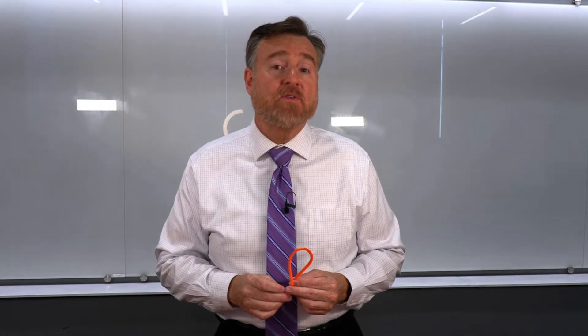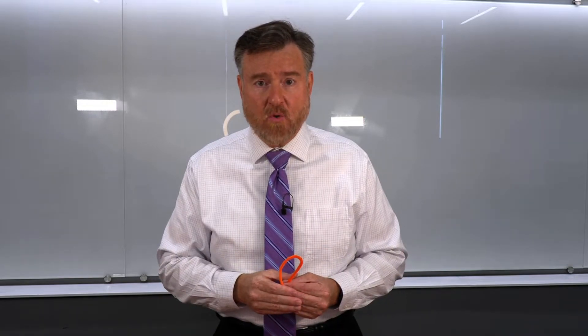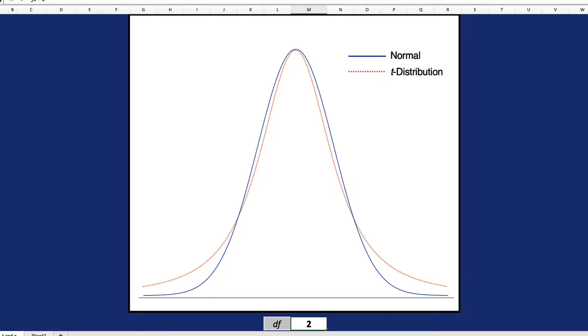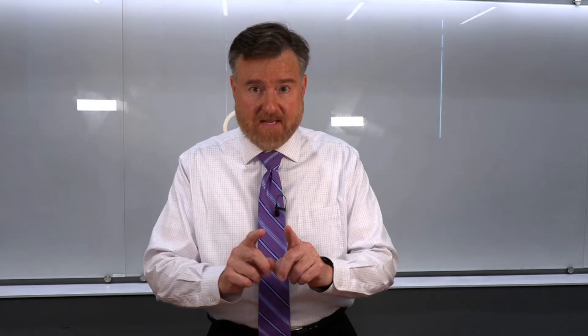Let me illustrate this with two types of distributions that we are going to see extensively in this course. What we are looking at in the blue line is a normal distribution. The dotted orange line is a T distribution. Don't worry about T distributions versus normal distributions right now. We'll learn more about T distributions in later lectures. All you need to know for now is to focus on the tails.